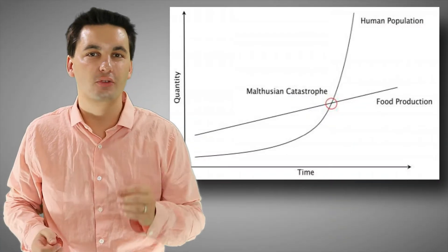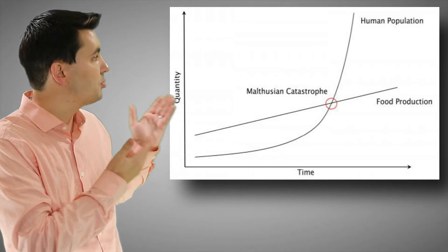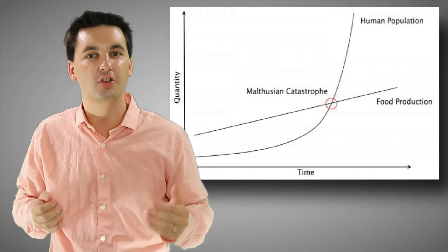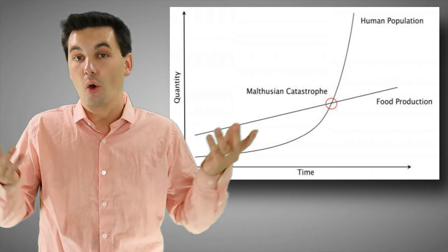What he's referencing here is a Malthusian catastrophe. We can see that we only can produce so much food, and when our population exceeds our carrying capacity we're going to run into some issues.